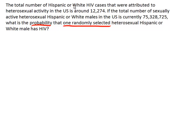This problem reads: the total number of Hispanic or white HIV cases that were attributed to heterosexual activity in the U.S. is around 12,274. If the total number of sexually active heterosexual Hispanic or white males in the U.S. is currently 75,328,725, what is the probability that one randomly selected heterosexual Hispanic or white male has HIV?